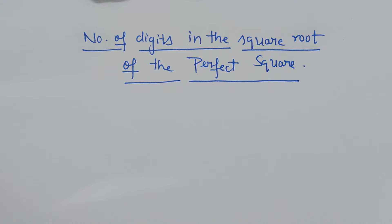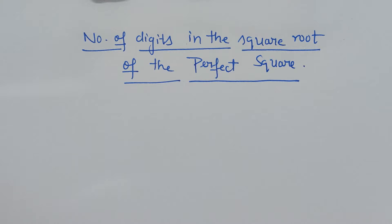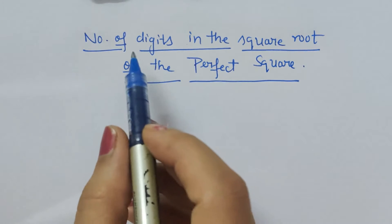Hello friends. In this video we are going to discuss how to estimate how many digits would be there in the square root of any given perfect square. For example, if we are given 64, it is very easy to estimate that its square root is 8. But in case we have been given a very large number, whether even or odd, how will we be able to calculate the number of digits in its square root?